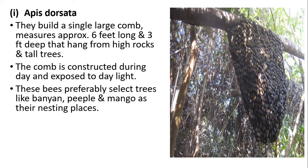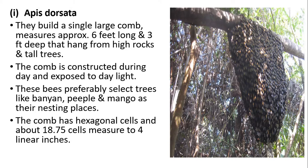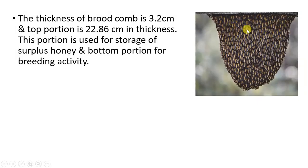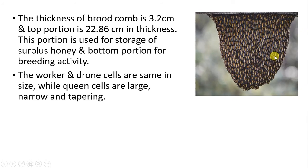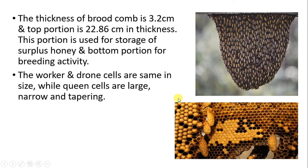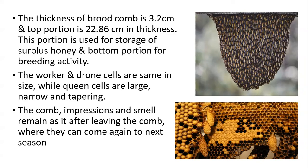The comb of Apis dorsata has hexagonal cells, with about 18.75 cells measuring four linear inches. The thickness of the brood comb is 3.2 centimeters, and the top portion is 22.86 centimeters thick, mainly used for storage of surplus honey and pollen. The middle and lower regions are for breeding activity. Worker and drone cells are the same in size, but the queen cells are large, narrow, and elongated.